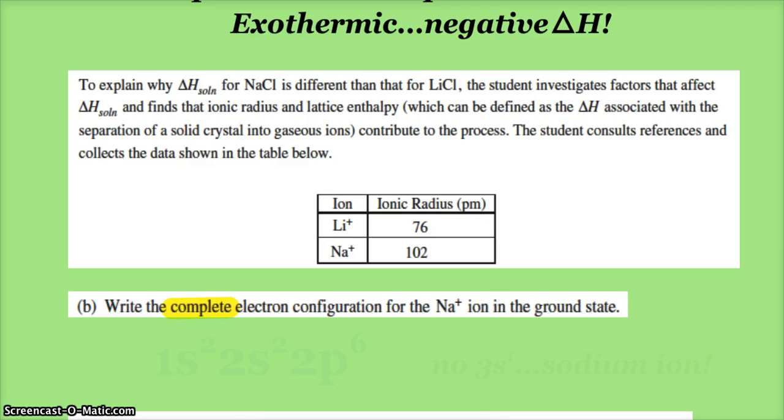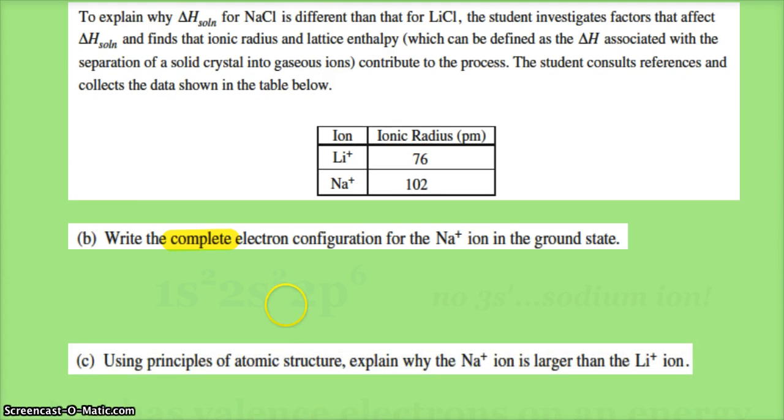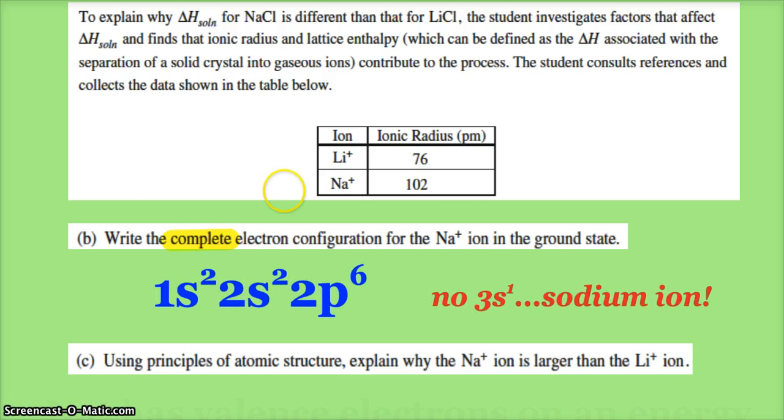Part B: write the complete electron configuration for the sodium ion in the ground state. So sodium is atomic number 11, so typically it's 1s² 2s² 2p⁶ 3s¹, but it's the ion, so we get rid of the 3s¹. You can't use the shortened notation putting helium in brackets or whatnot, but it did say complete electron configuration.